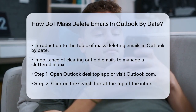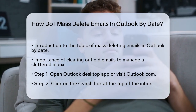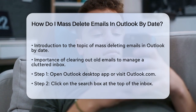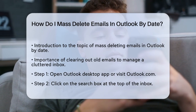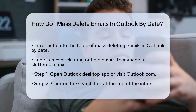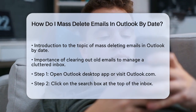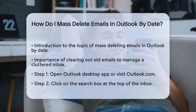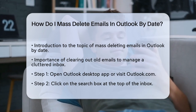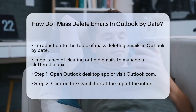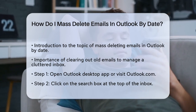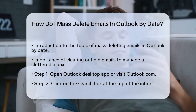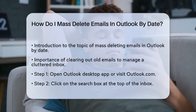First, you need to use Outlook's search feature to find the emails you want to delete. Here's how you can do it. Open your Outlook desktop app or visit the Outlook.com website. Click into the search box at the top of your inbox. You'll see a small downwards arrow on the right side of the search bar. Click on this to open the filter options.